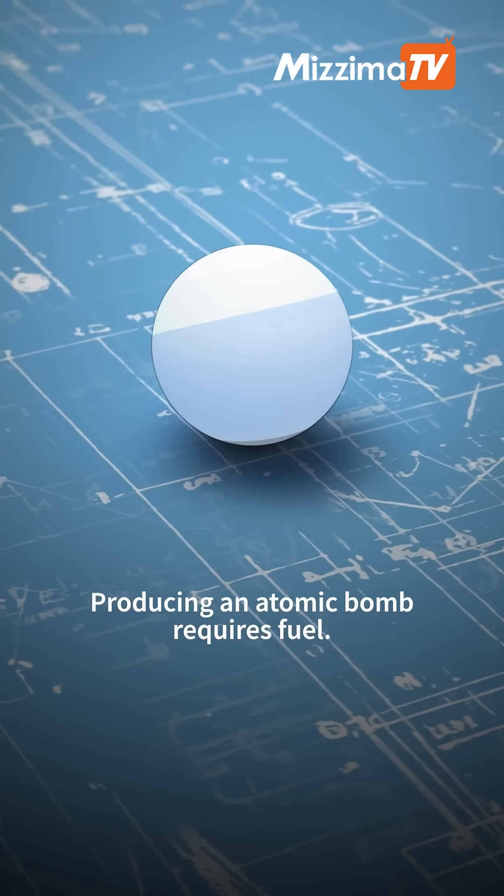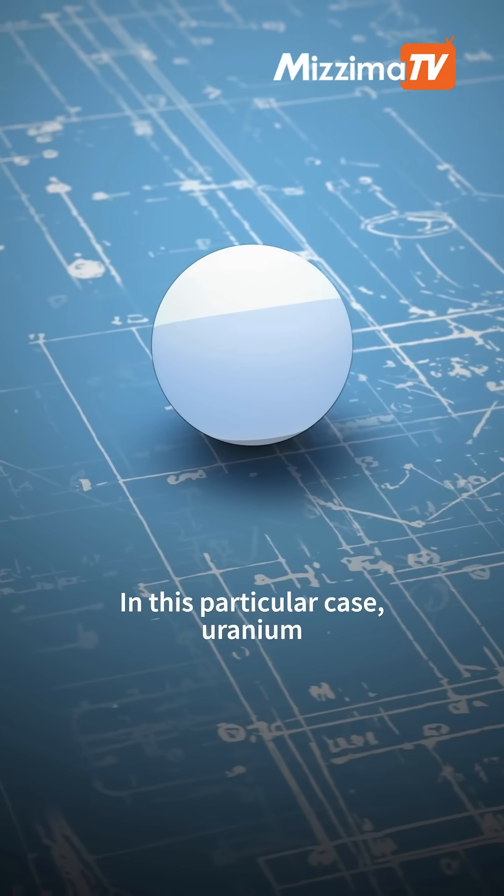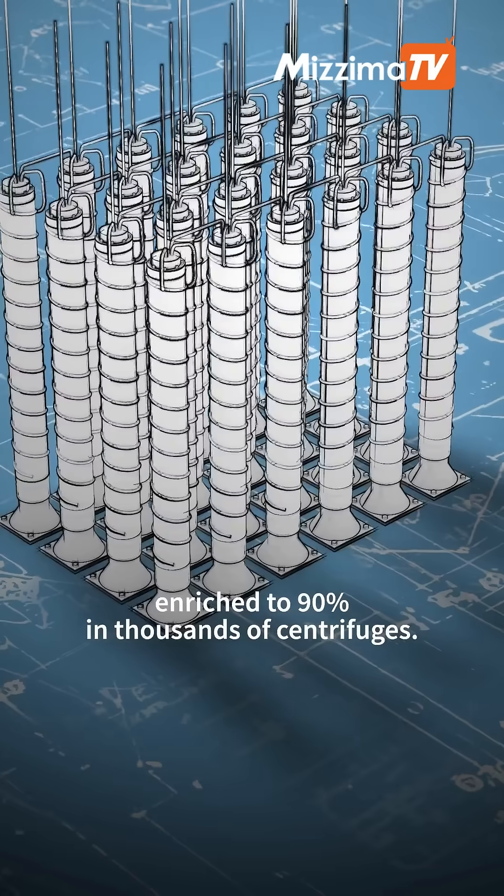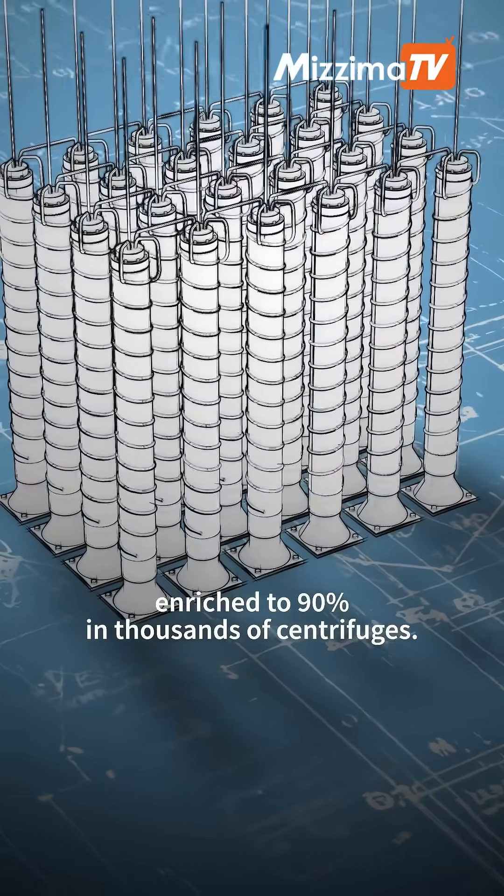Producing an atomic bomb requires fuel, in this particular case uranium, enriched to 90% in thousands of centrifuges.